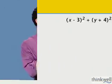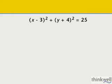Look, let's face it: if someone gives you an equation that looks like x minus 3 squared plus y plus 4 squared equals 25, you can immediately read off the center and the radius of that circle. It's not a big deal.